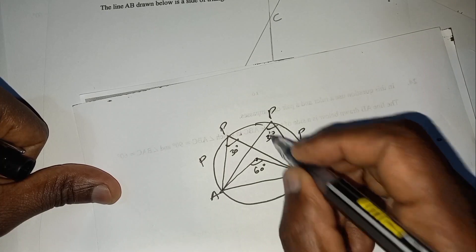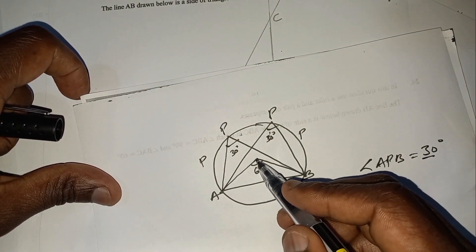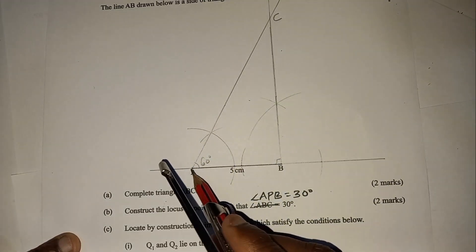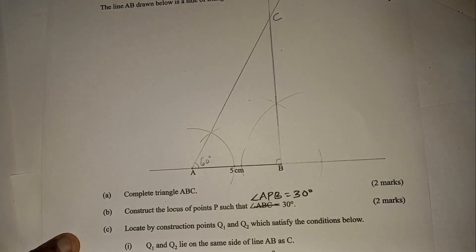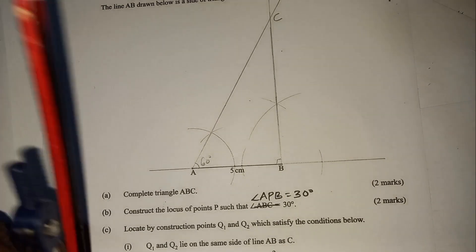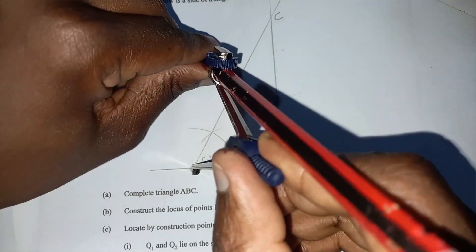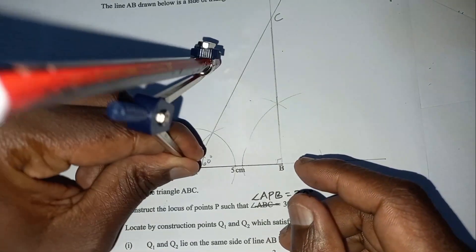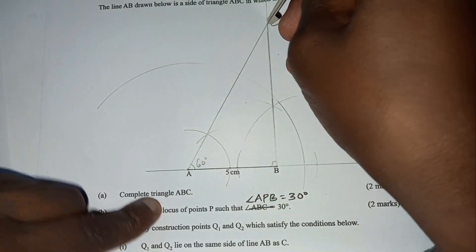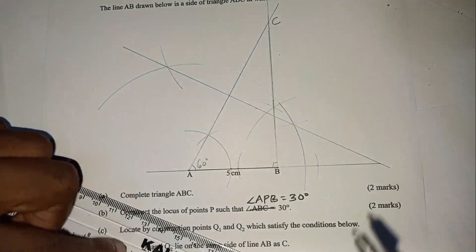So we should ensure we get the center of the circle first, then construct a circle passing through points A and B with 60 degrees at the center. To get the center, we bisect any two lines. I'll start by bisecting AC. Stand at A, open the compasses more than half, then mark an arc there and another arc there. With the same radius, stand at C and cut that arc to bisect the line AC.